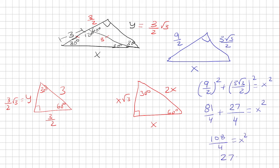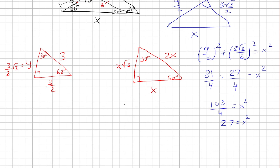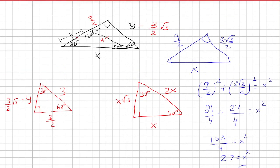108 over 4 is 27, so we have 27 equals x squared, which means that x is the square root of 27, which I can write as 9 times 3. I factor out the square root of 9, which becomes 3, and this is root 3. So the 9 comes out as 3, and you're left with root 3 inside. So the final answer is x is 3 root 3, and y is 3 root 3 over 2.